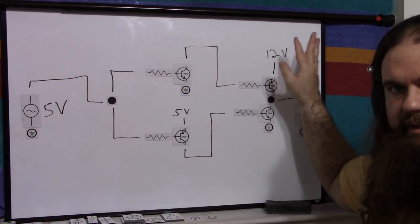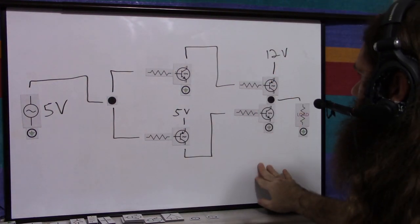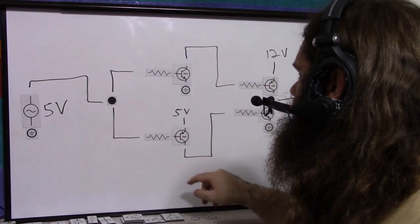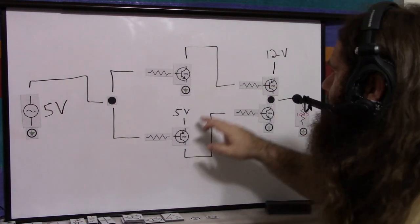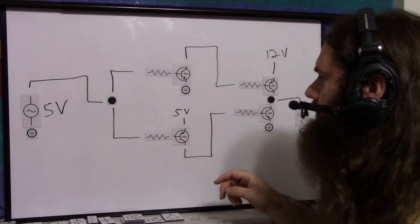So this is just the push-pull. There's nothing fancy here. Nothing changed there. This is the push-pull driver. So the square wave is 5 volts. The PNP here is fed by 5 volts, and the PNP there is fed by 12. That's the whole point.